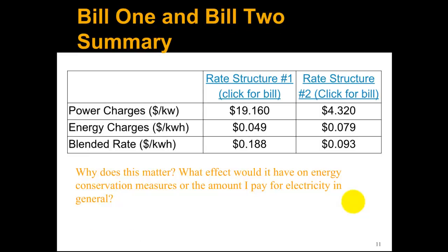So now let's compare the two bills. The school changed the rate structure from these months where it had a really high power charge and relatively low energy charge, and flipped it so that in rate structure number two it had a higher energy charge but a lower power charge. The question is: why does this matter? What effect would it have on energy conservation measures or the amount paid for electricity in general?